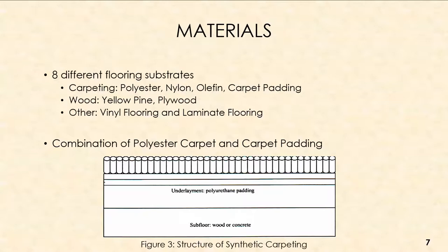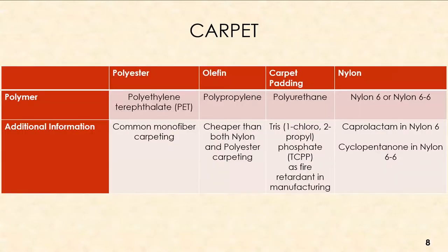I looked at eight different flooring substrates: carpeting — including polyester, nylon, olefin, and carpet padding — wood, specifically yellow pine and plywood, and an 'other' category including vinyl flooring and laminate flooring. I also looked at a combination of polyester carpet and carpet padding, which is more similar to what you would see in an actual structure, making it important to compare carpeting alone versus carpeting with padding.